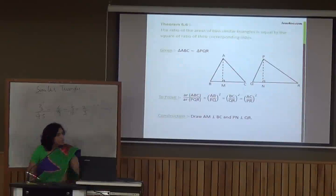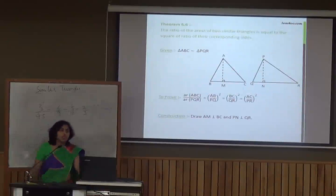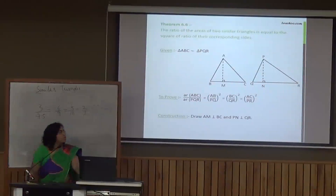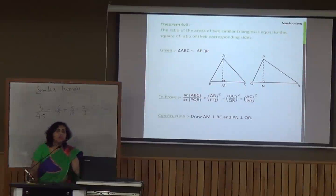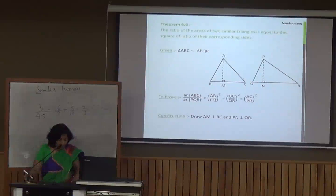Now let's move to another theorem: the ratio of the areas of two similar triangles. It states that the ratio of the areas of two similar triangles is equal to the square of the ratio of their corresponding sides. Let's see its proof.